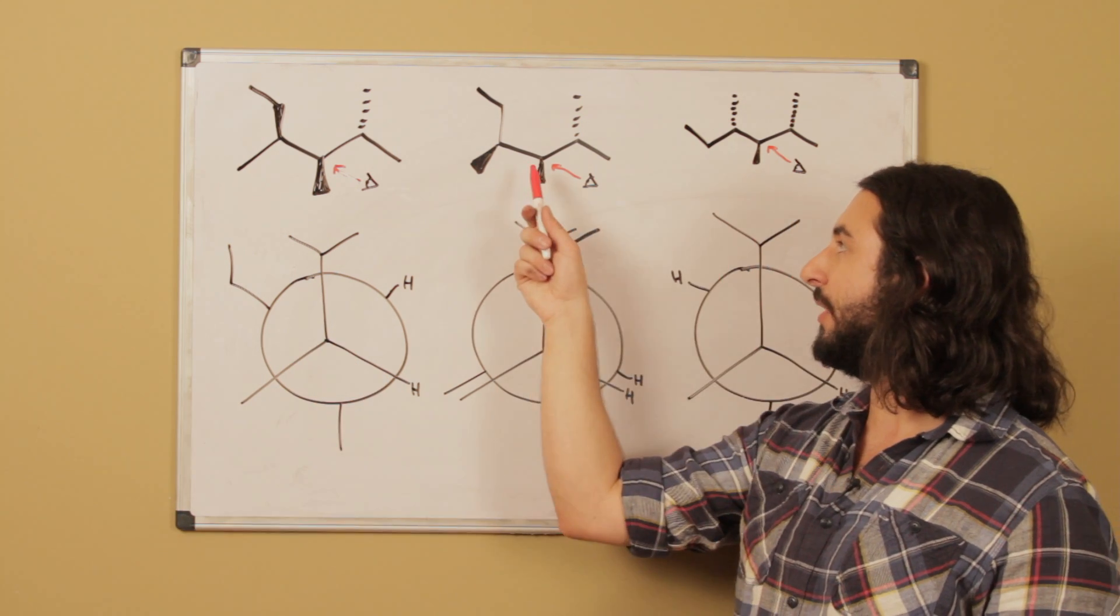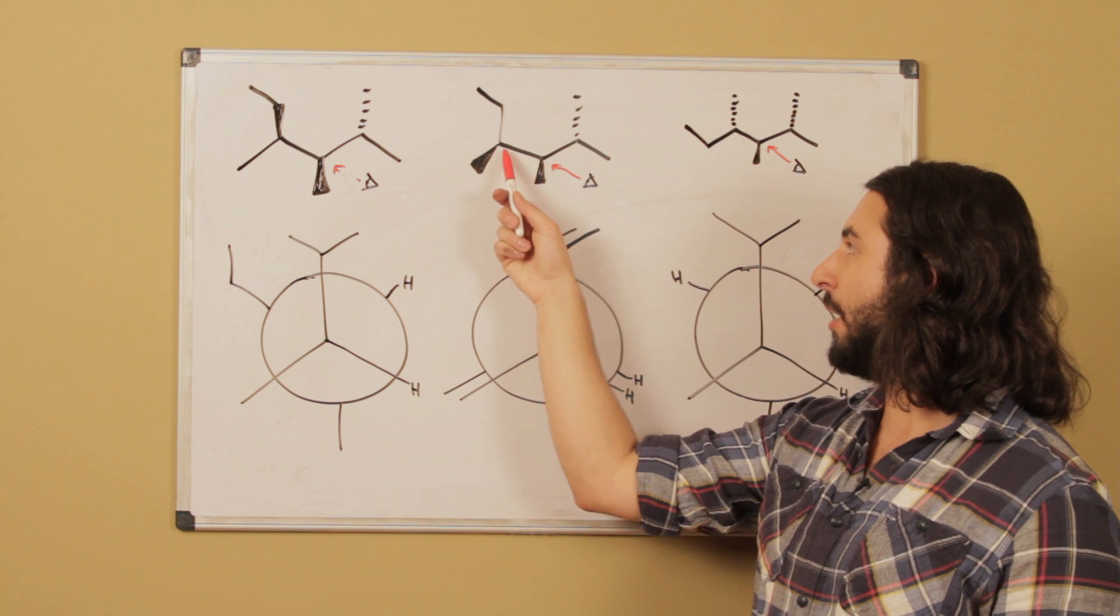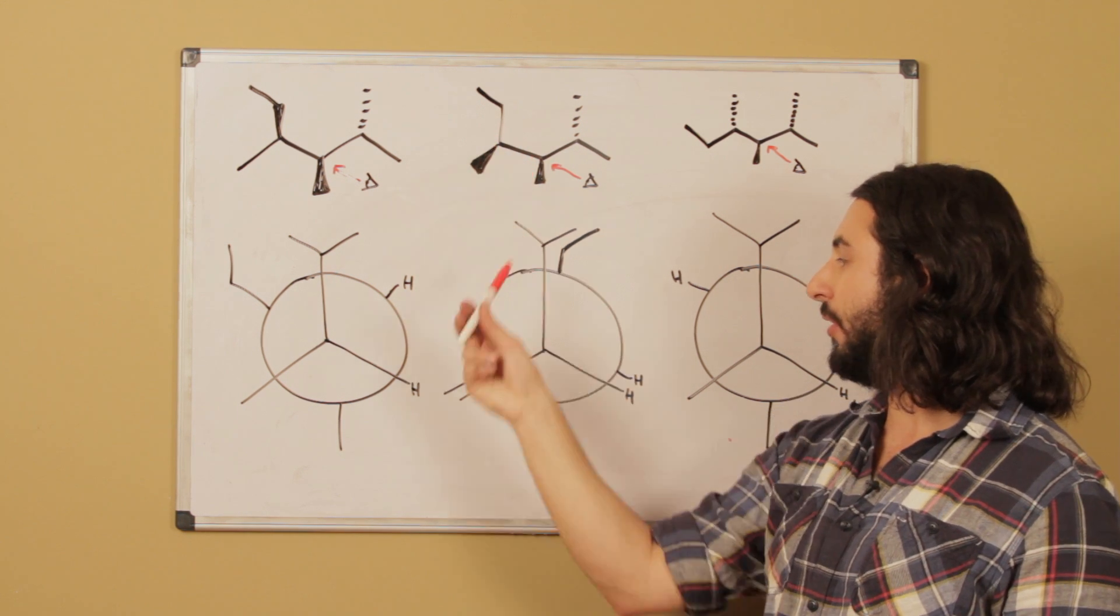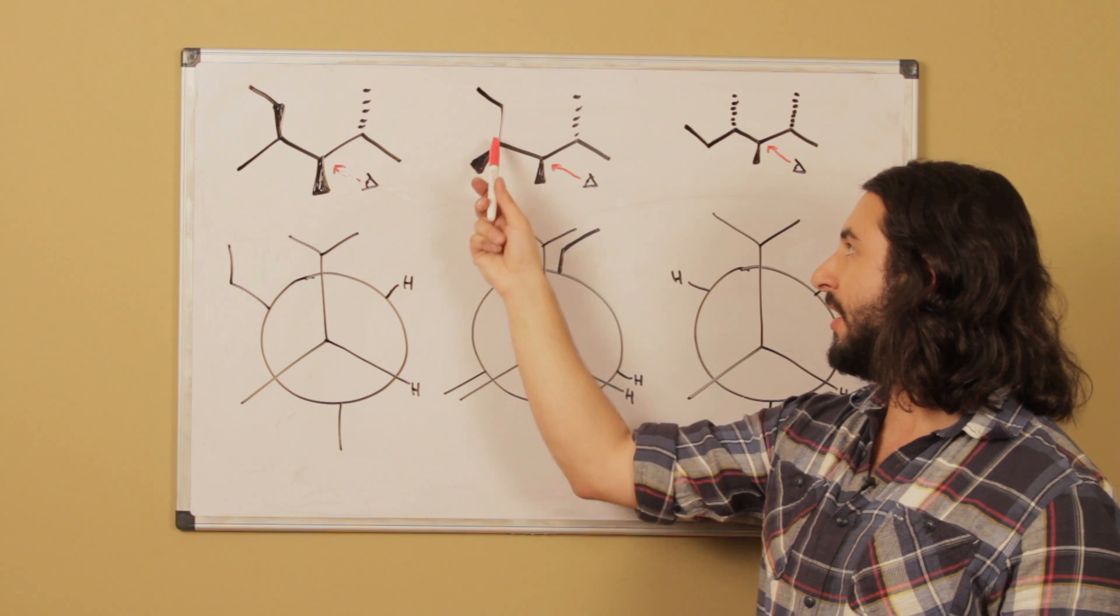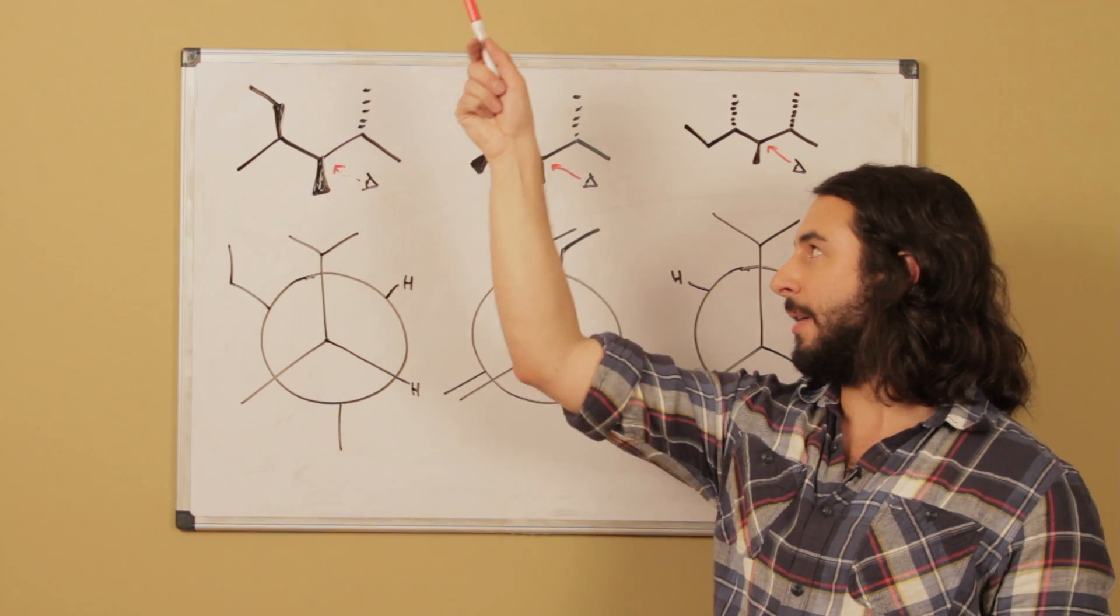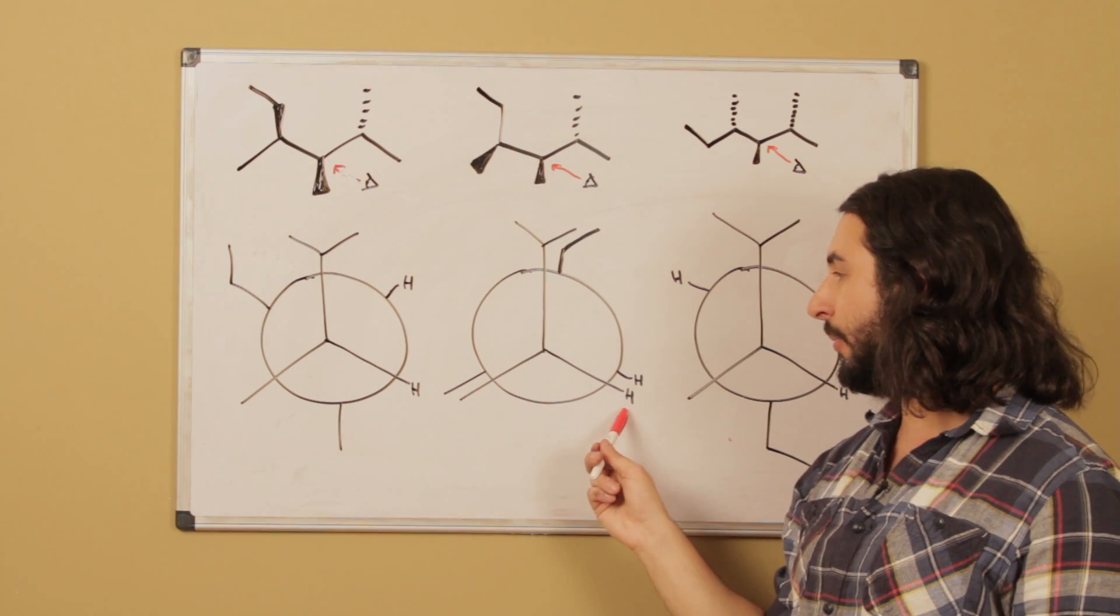On this one here, this is going to be a little different, because here on this back carbon, we've got that wedge methyl, that's down to the left, and then we have the ethyl straight up, and the implied hydrogen down to the right.